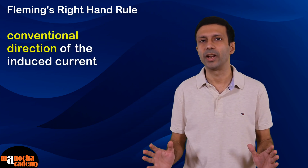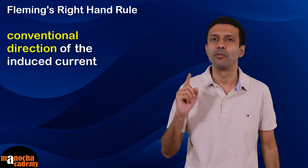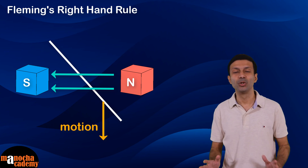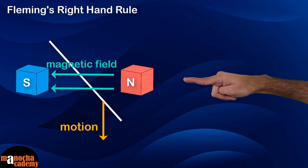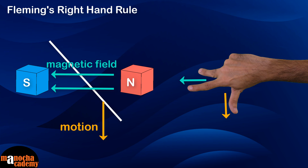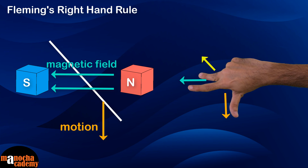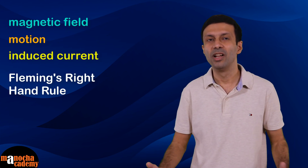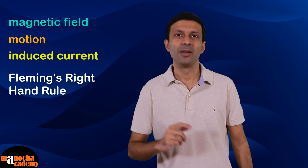One important thing to note: just like Fleming's left-hand rule, Fleming's right-hand rule gives the conventional direction of the induced current, not the direction of flow of electrons. When the wire is moved downwards, the forefinger still points in the direction of the magnetic field, and the thumb points downwards. The center finger then gives the direction of the induced current — inwards along the wire. So if the direction of any two of the three things — magnetic field, motion, and induced current — are known, Fleming's right-hand rule gives the third.